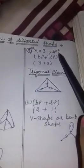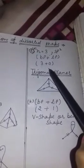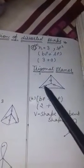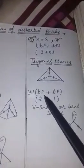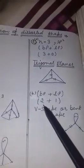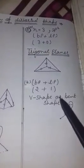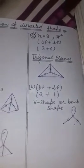If N is equal to 3, then hybridization will be SP2. So if bond pairs are 3 and there are no lone pairs, then the shape will be trigonal planar. Like this. If bond pairs are 2 and lone pair is 1, then the shape will be V-shaped or bent shape. Like this.